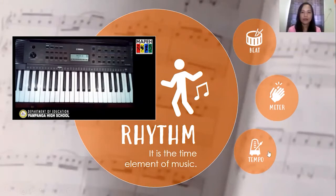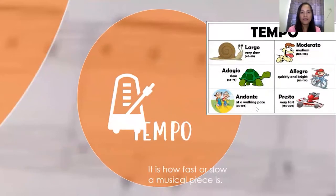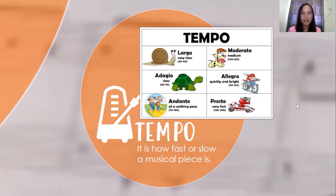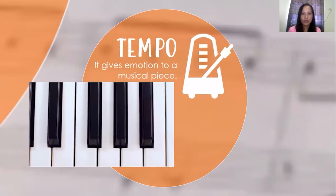Next is tempo. Tempo is how fast or slow a musical piece is. There are terms that usually describe the tempo of music: largo — very slow; andante — moderately slow; and presto — very fast. Tempo also gives emotion to music. When it is slow, it is sad, and when the music is fast, it is happy.